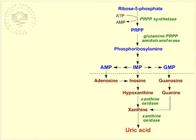Excess uric acid in the blood is called hyperuricemia. In a greater part of the cases, this may lead to gout. Gout is an extremely painful disorder in which, because of its very low solubility, uric acid crystallizes in the joints, under the skin, and in the kidney renal tubules.